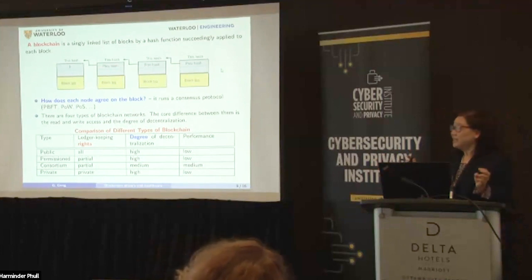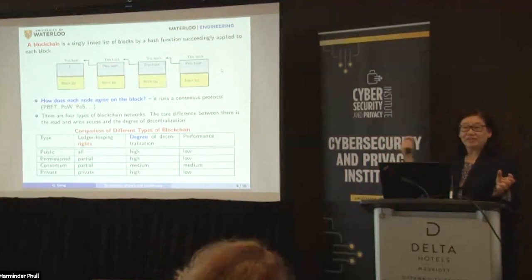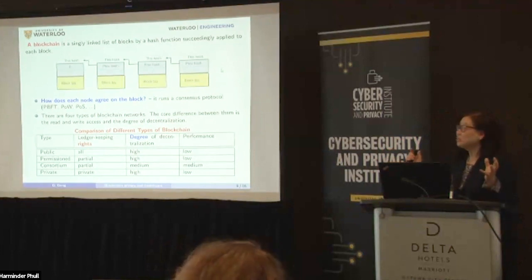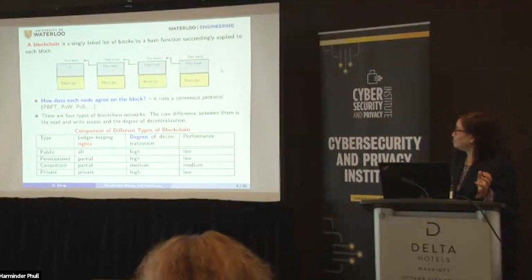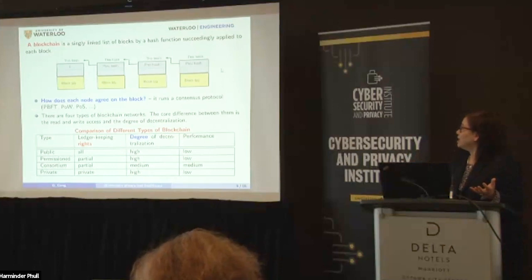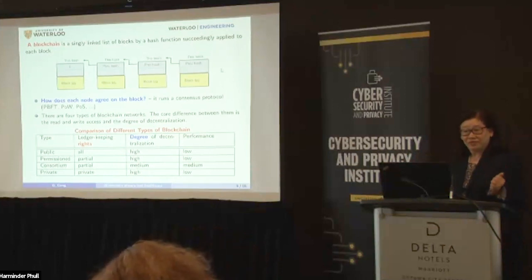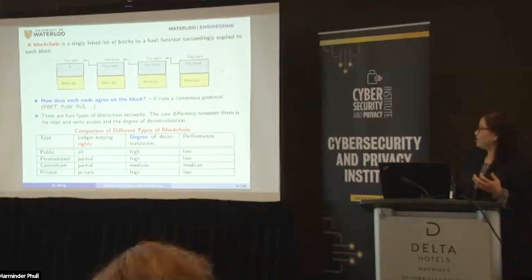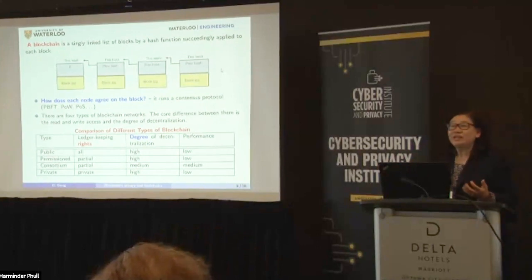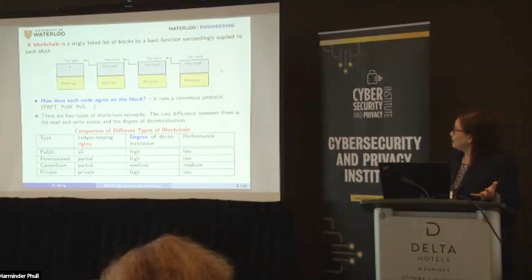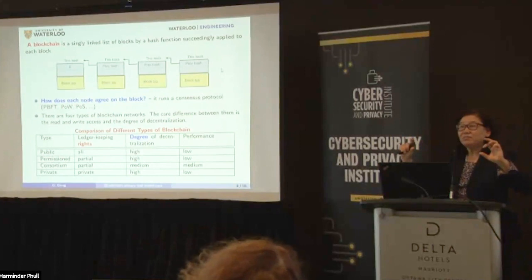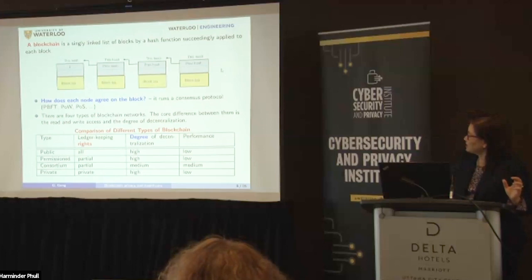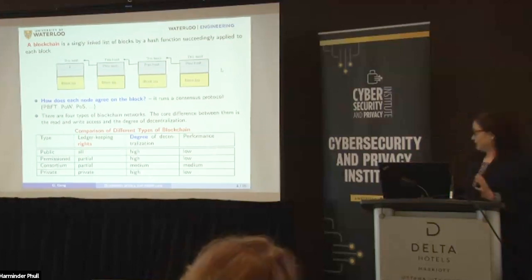How every entity in the network agrees on a single record — for example, your health record — runs through something called the consensus protocol. In old P2P or decentralized systems they used the Byzantine fault protocol. Bitcoin created a new one called proof of work, which involves heavy computation to get those hash values. There are different blockchain networks: public chain, permissioned chain, consortium chain, and private chain — those depend on the degree of decentralization and how transparent the system is, defining performance for different blockchain systems.